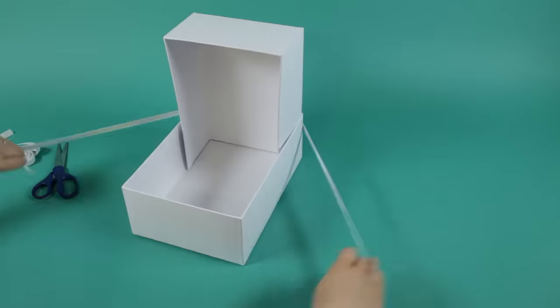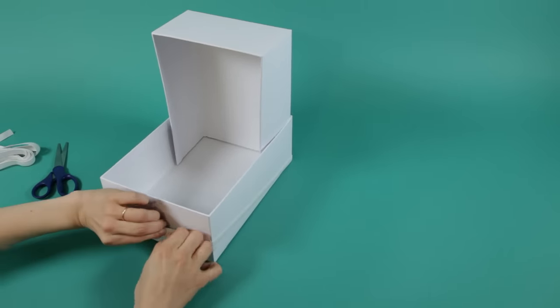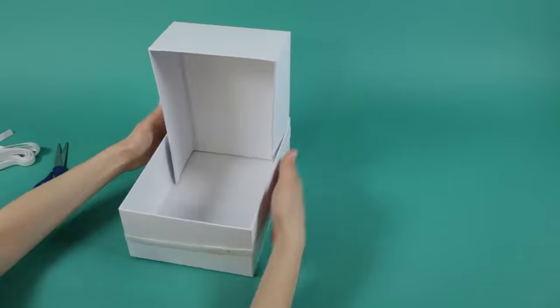Take a piece of elastic and wrap it around the bottom box firmly. Then glue the elastic ends together with a hot glue gun.